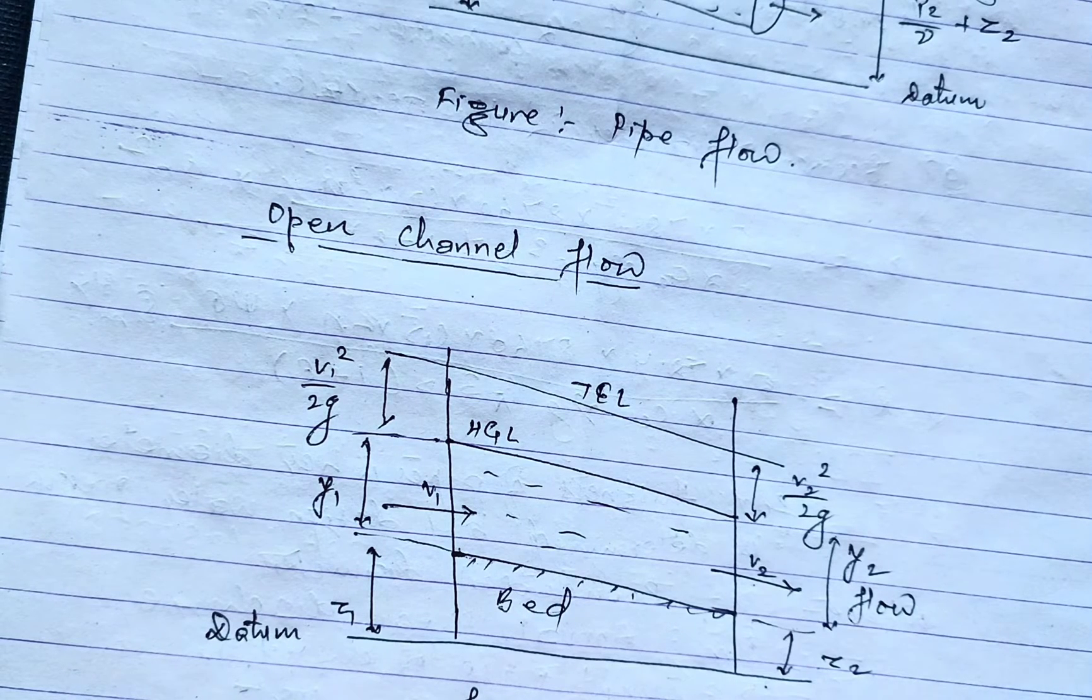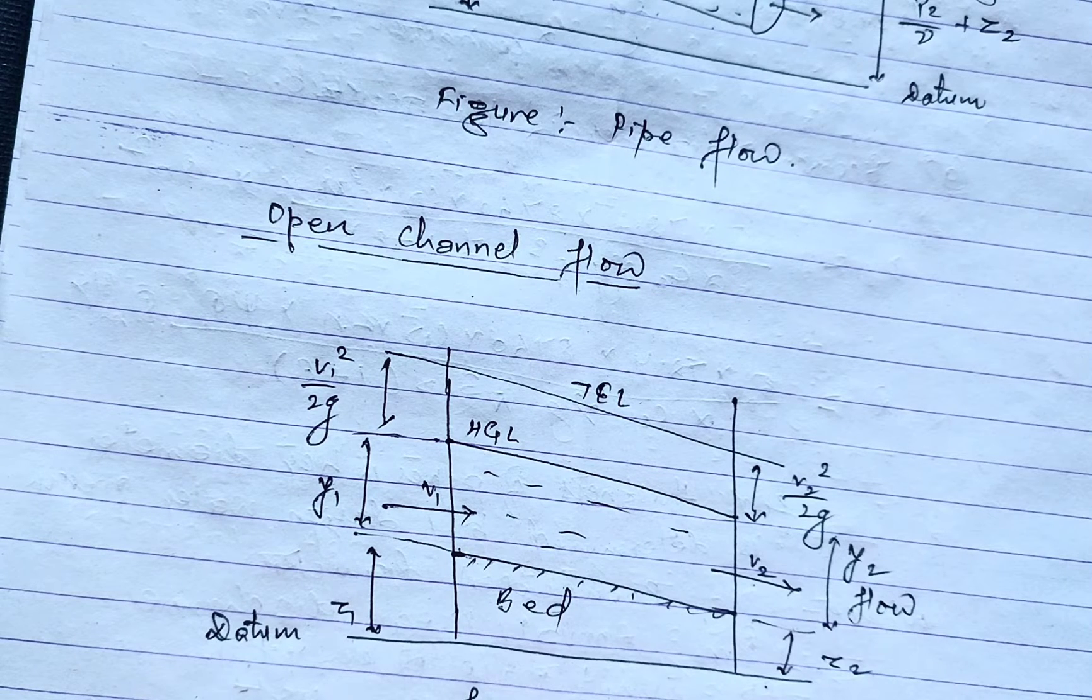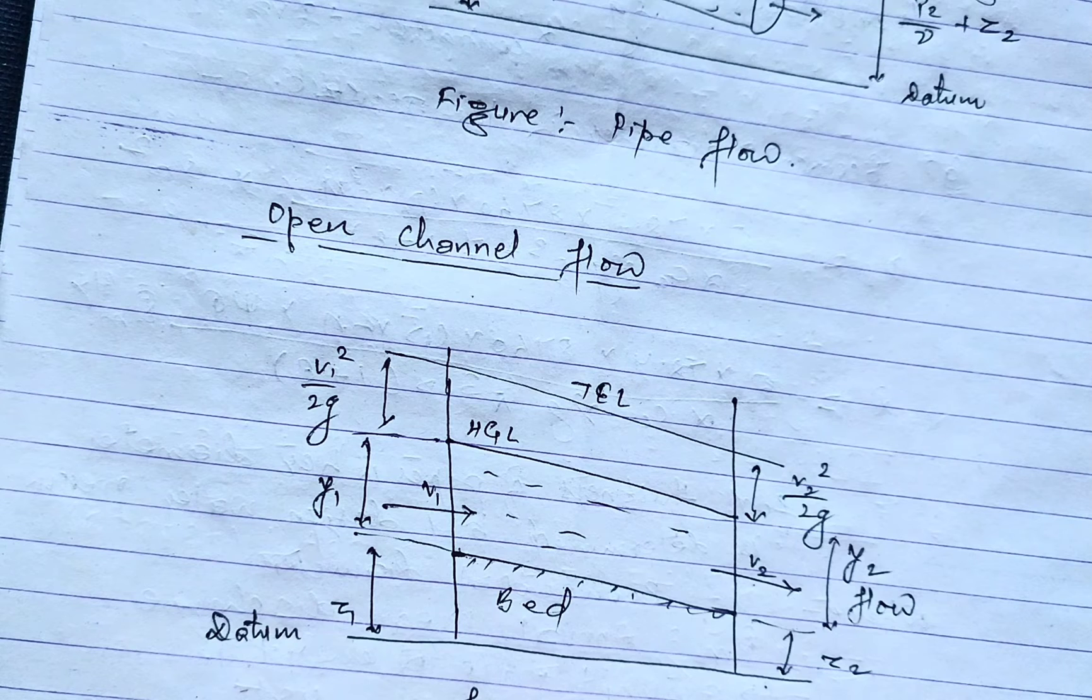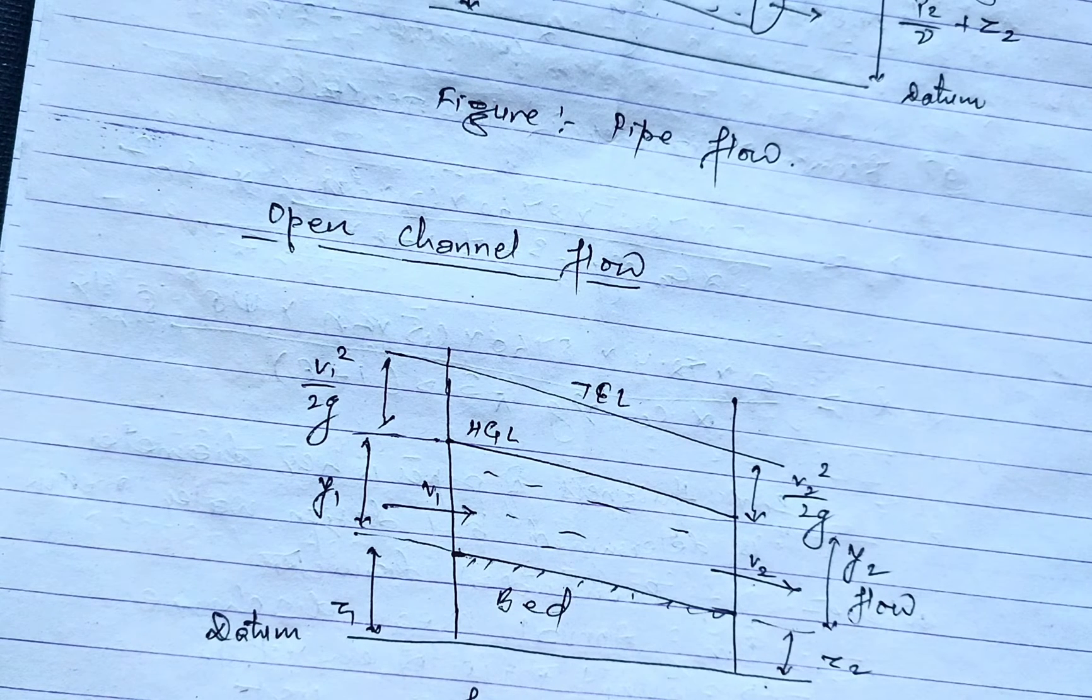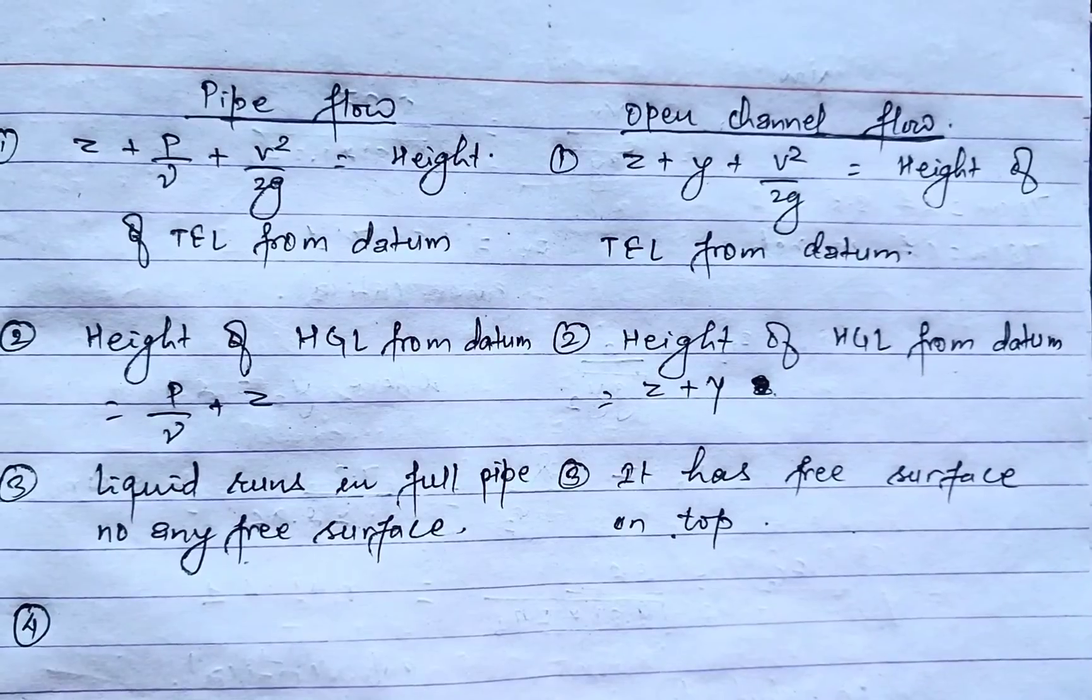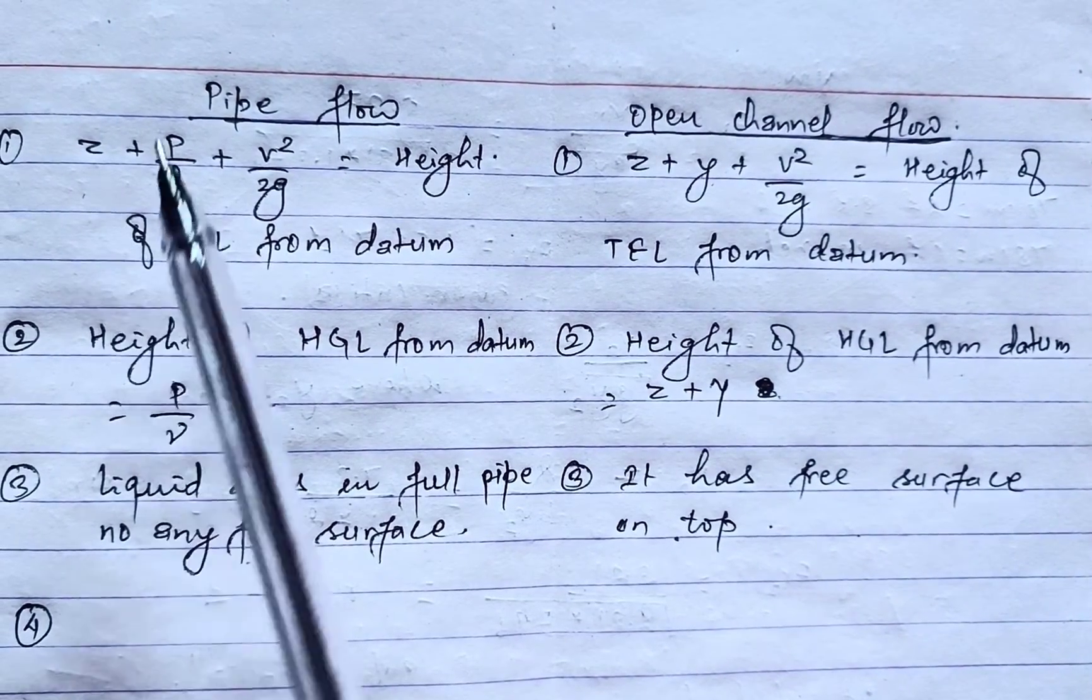It flows under atmospheric pressure due to component of gravity with a free surface. Since this flow is always associated with a free surface, it is also called free surface flow.